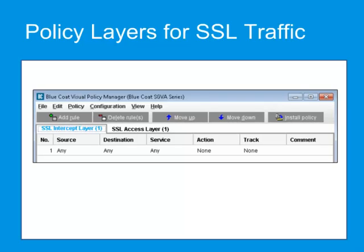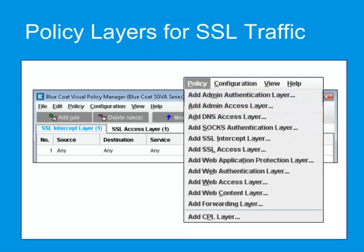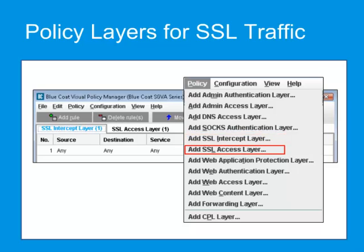SSL interception and access rules, including server certificate validation, are configured through policy, whether using the VPM or CPL. You can use the SSL intercept layer to configure SSL interception. Use the SSL access layer to control other aspects of SSL communication, such as server certificate validation and SSL versions.